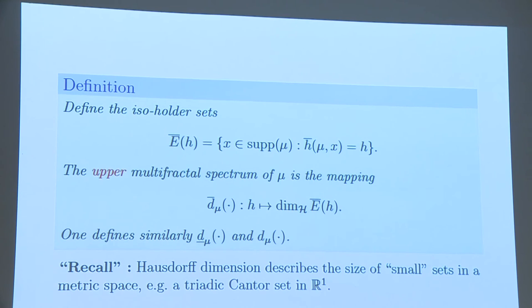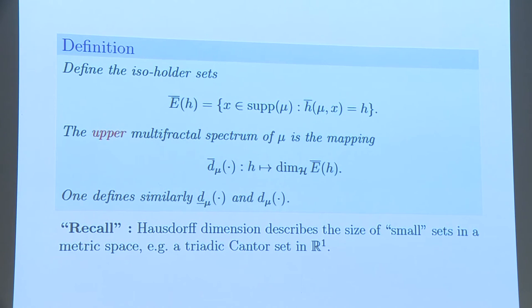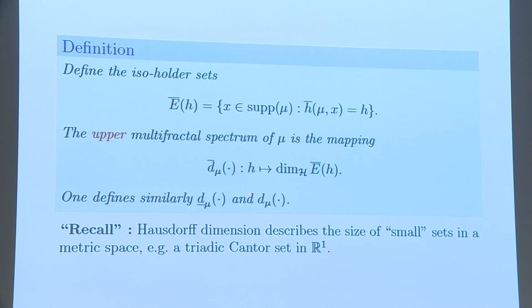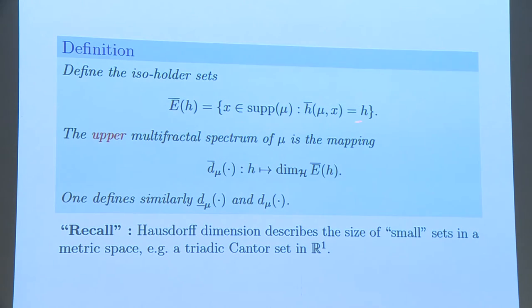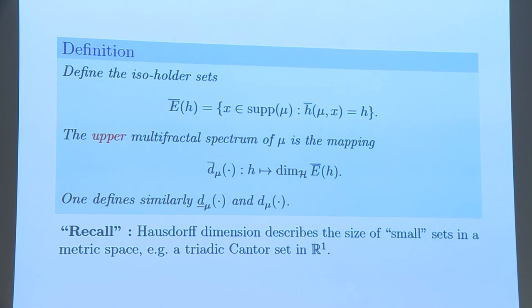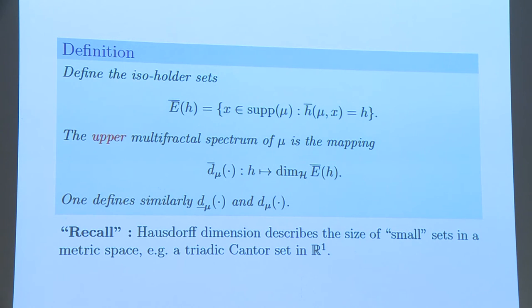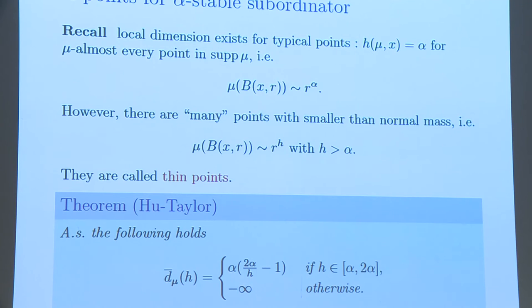The definition of what we call upper multifractal spectrum is the mapping to associate each value of H, possible H, the power law, to the Hausdorff dimension of this level set for this regularity exponent. The Hausdorff dimension, by a word, describes how small a set in a metric space is. This is the right notion in this context, and in many others. But we can also consider, for example, the packing dimensions of this kind of set.